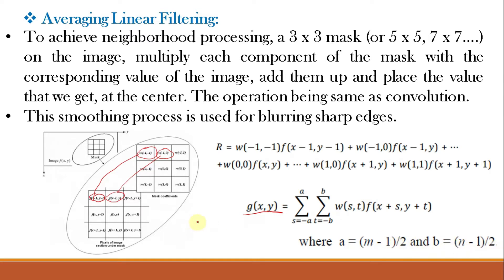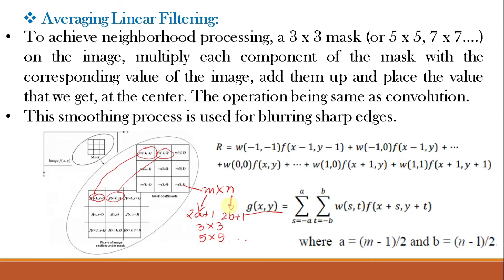For an M×N mask, M = 2a+1 and N = 2b+1. The smallest value of a and b is 1, giving a 3×3 mask. If a and b equal 2, we get a 5×5 mask, and so on. The size of the mask must be odd to ensure it has a center, and the smallest meaningful size is 3×3. The mechanism of spatial filtering consists simply of moving the filter mask from pixel to pixel in an image.